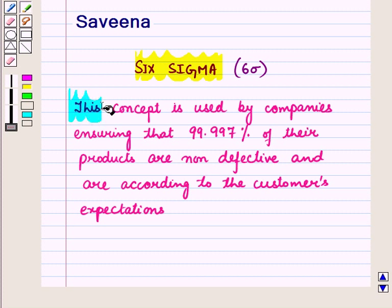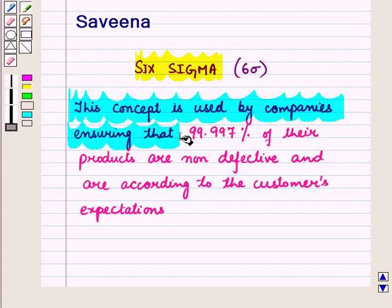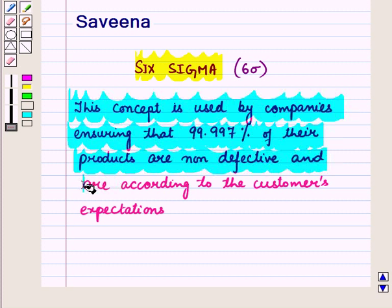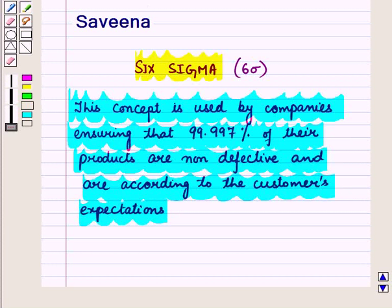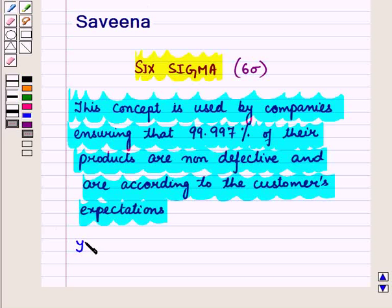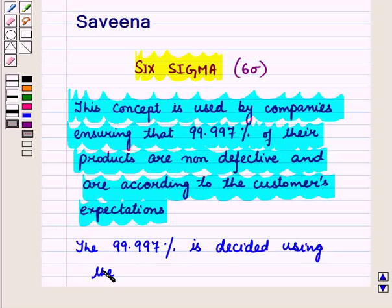This concept is used by companies ensuring that 99.997% of their products are non-defective and are according to the customer's expectations. The 99.997% is decided using the normal distribution.